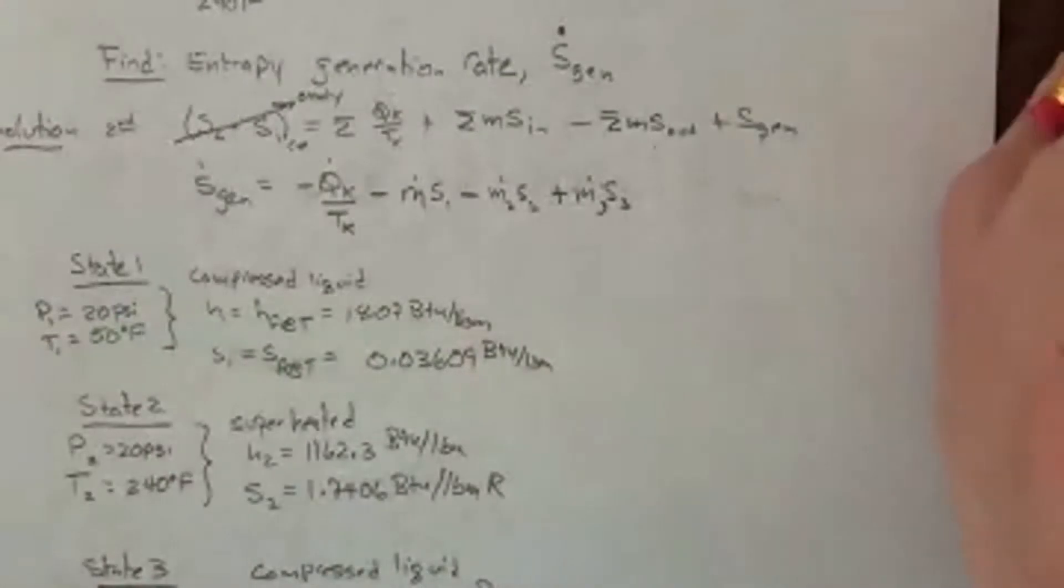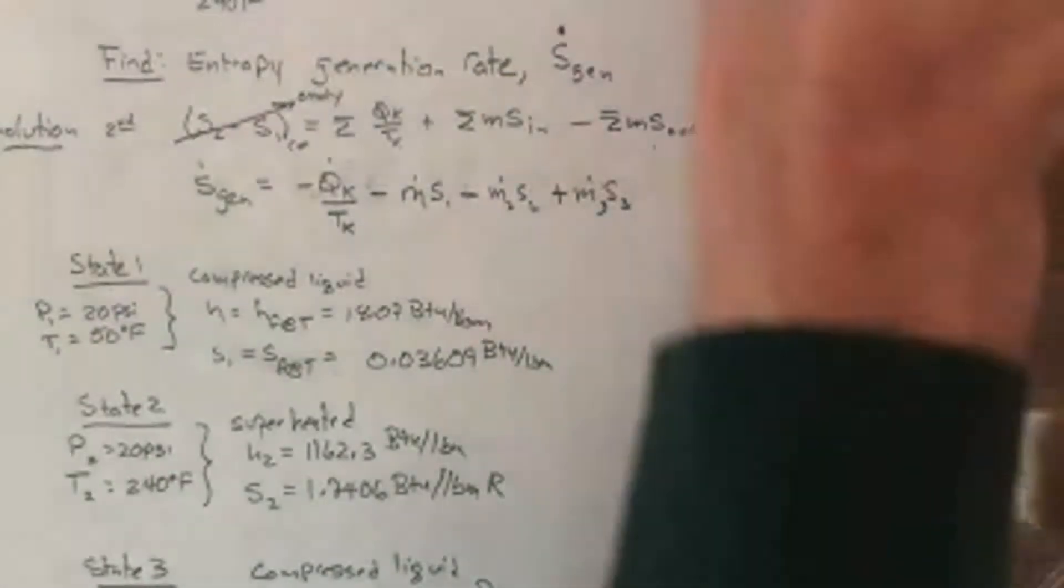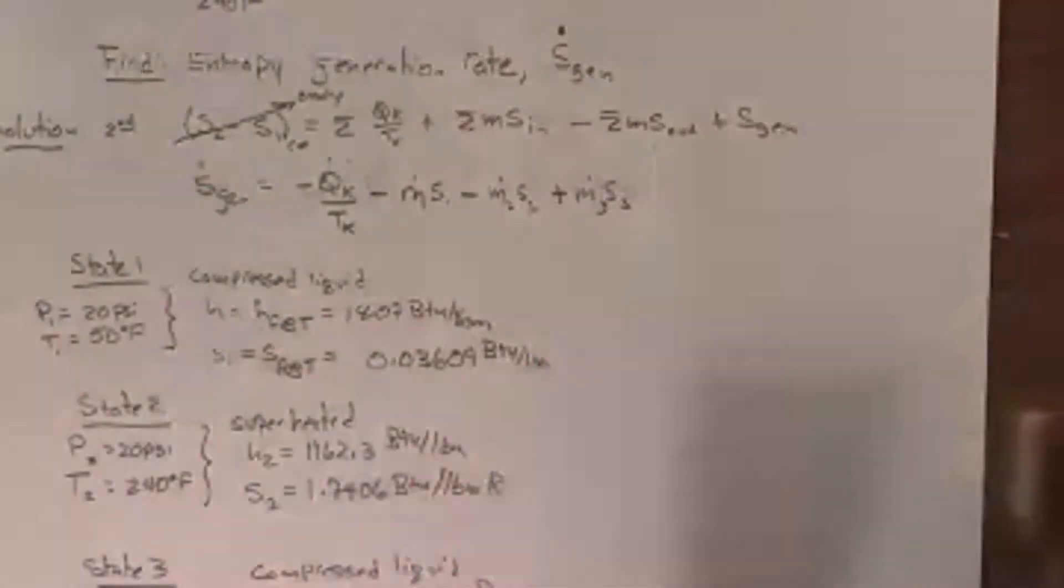So just by looking up state one, this inlet stream, I can see that it is compressed liquid. So I'm going to go to the compressed liquid tables, but they're not there. So I'm going to have to estimate the values as a function of temperature using the saturated liquid property. So I'm going to get the H there and the S.